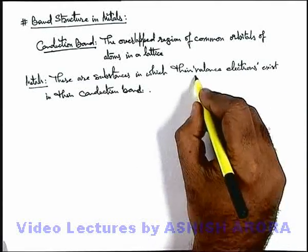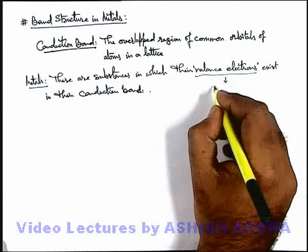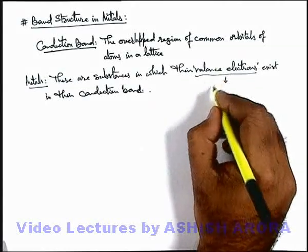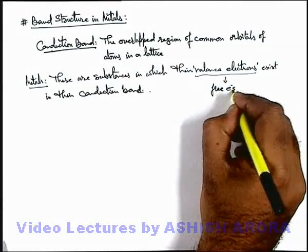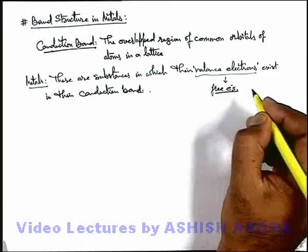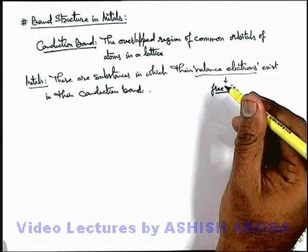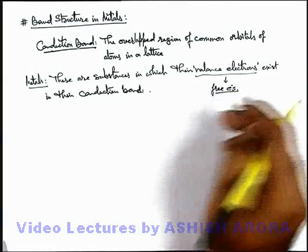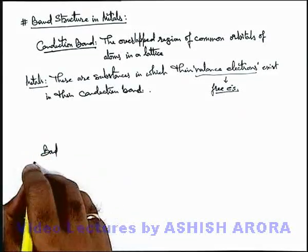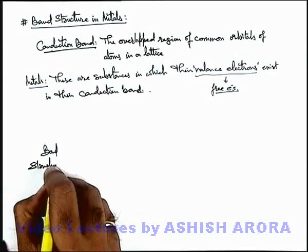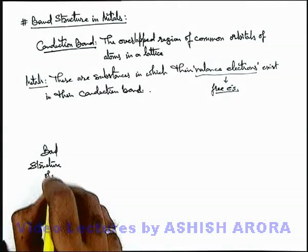Wherever valence electrons are in the zone of free electrons, or valence electrons are free to move, then these substances can conduct electricity. Let's have a look at the band structure of metals.